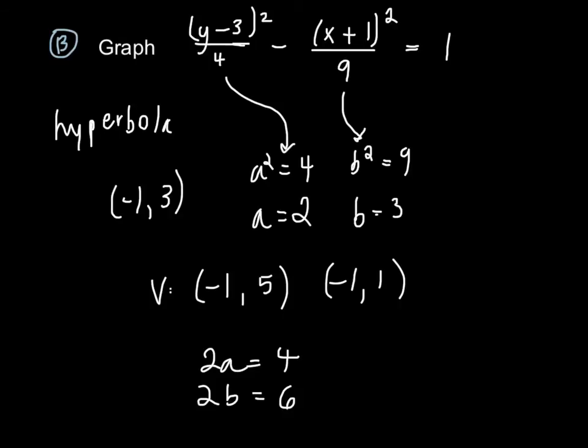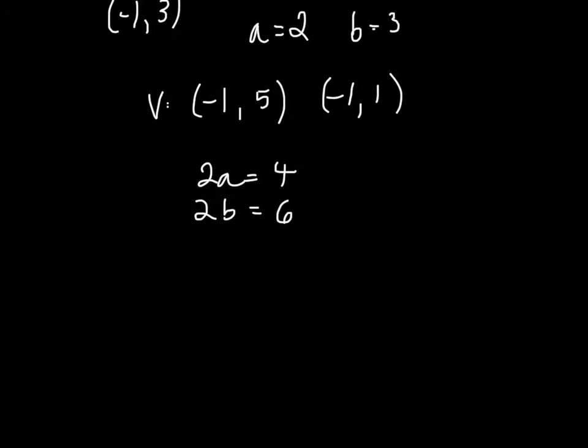To find our c value, or our foci, we know that c equals root 13, approximately 3.6. So our foci are going to be at negative 1, 6.6 and negative 1, negative 0.6.